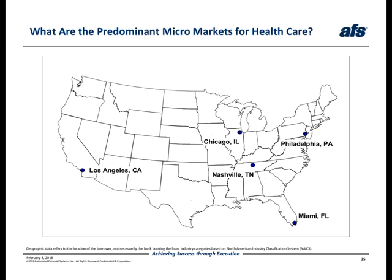Of course, the trends for healthcare vary substantially across geographic markets. We know from working with many of you that competitive conditions in, say, Philadelphia, can differ very much so from those in Miami, even when you look at loans in the same industry. To help capture these dynamics, we'll examine how the broader healthcare trends are playing out across the micro markets shown here on this map. It's certainly not all the major hubs for healthcare in the database, but we believe these five provide good coverage across the country and form a solid representative sample.